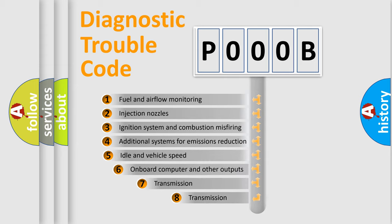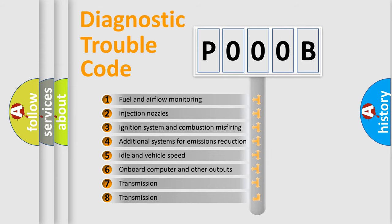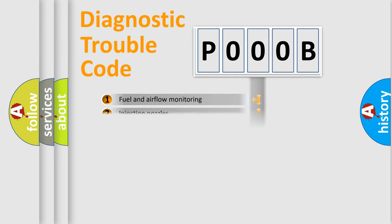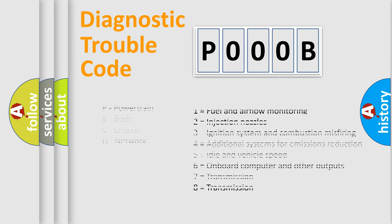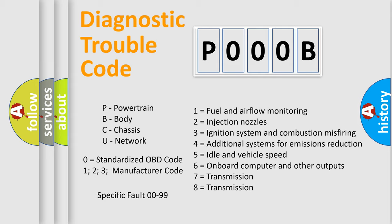The third character specifies a subset of errors. The distribution shown is valid only for the standardized DTC code. Only the last two characters define the specific fault of the group. Let's not forget that such a division is valid only if the second character code is expressed by the number zero.